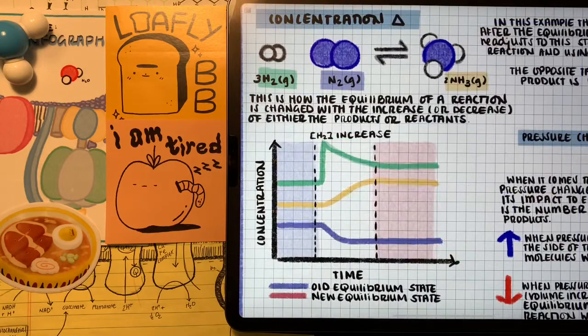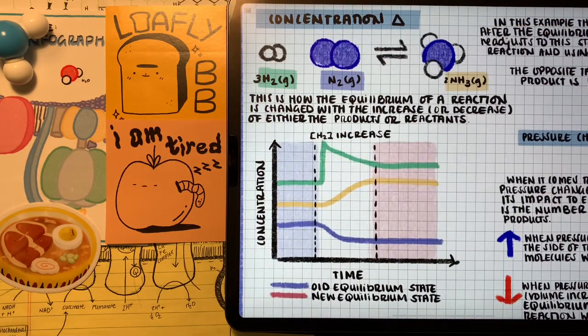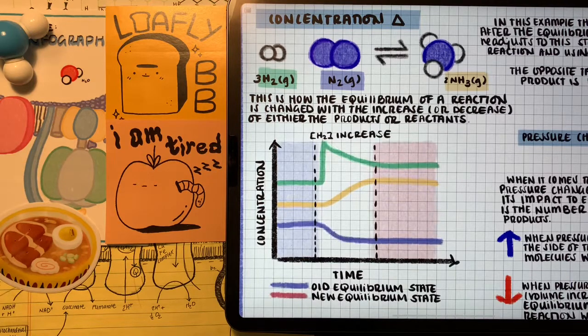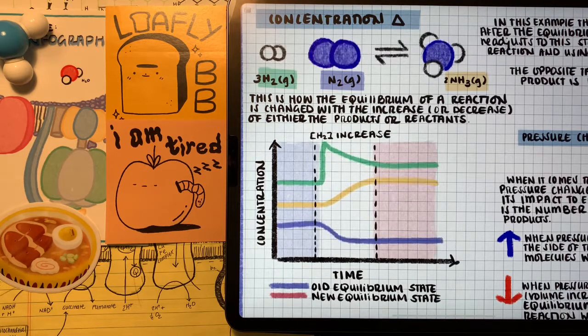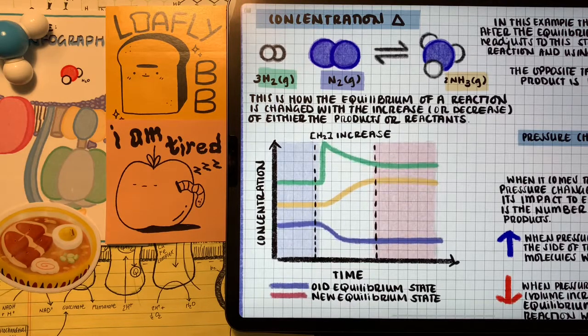Now, when it comes to talking about concentration changes, once a system is already at equilibrium, in my opinion, the Le Chatelier's principle for concentration change is the easiest. Just kind of think about it like this. Whatever changes we put onto the concentration of the reactants or products, the side of the reaction that can compensate for that change is going to be favored.